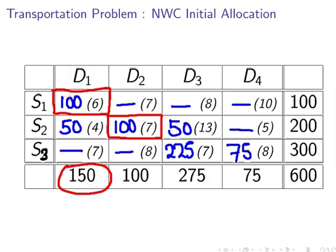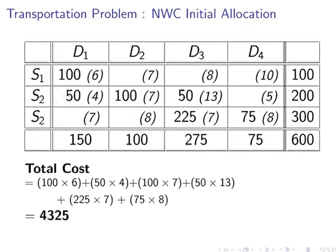What is the total cost here now? What we're going to do is compute the total cost. We're going to ship 100 units from S1 to D1, and the cost per unit shipped is 6 dollars or euros. 50 are going to go from S2 to D1, and that's 4 dollars for each item shipped. Likewise, 100 units at 7 dollars per unit, and so on. Calculating that up, we will find that the total cost is 4325. So the total cost of shipment from all the suppliers to all the customers is 4325.